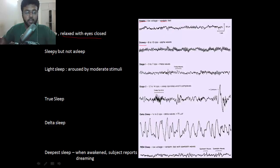When person is drowsy and sleepy but not yet asleep, you'll find alpha waves. In stage 1, you'll find theta waves where person can be aroused by moderate stimuli. Stage 2, where the person is truly sleeping, you'll find sleep spindle and K complex. Sleep spindle and K complex, these are important.